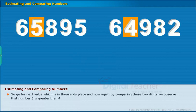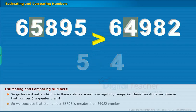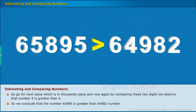So, go for next value, which is in 1000's place. And now, again, by comparing these two digits, we observe that the number 5 is greater than 4. So, we conclude that the number 65895 is greater than 64982.